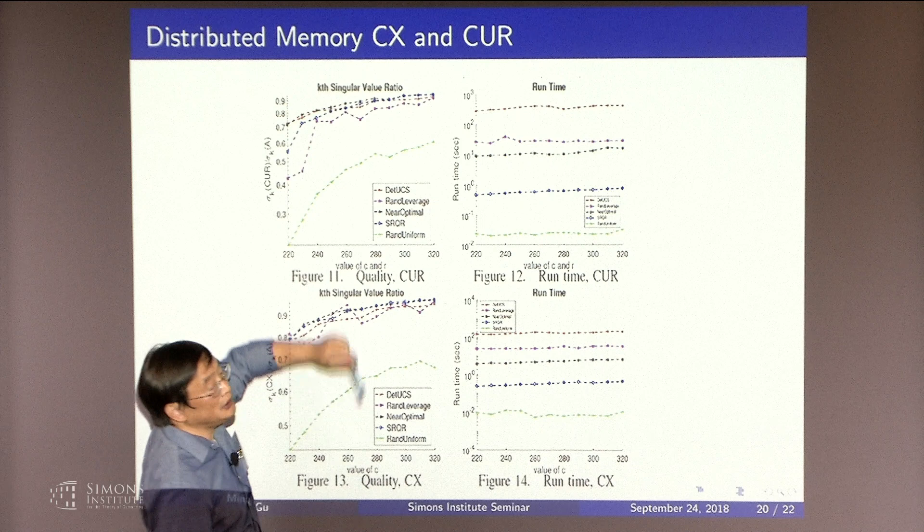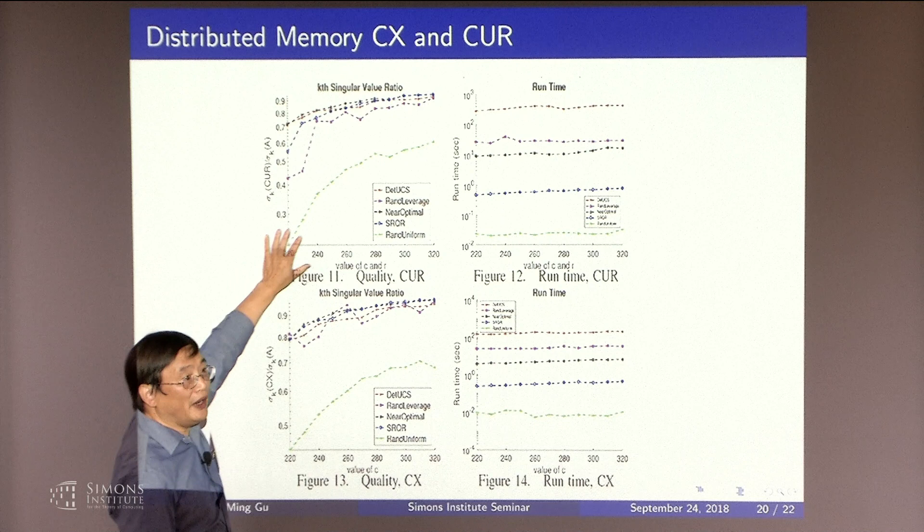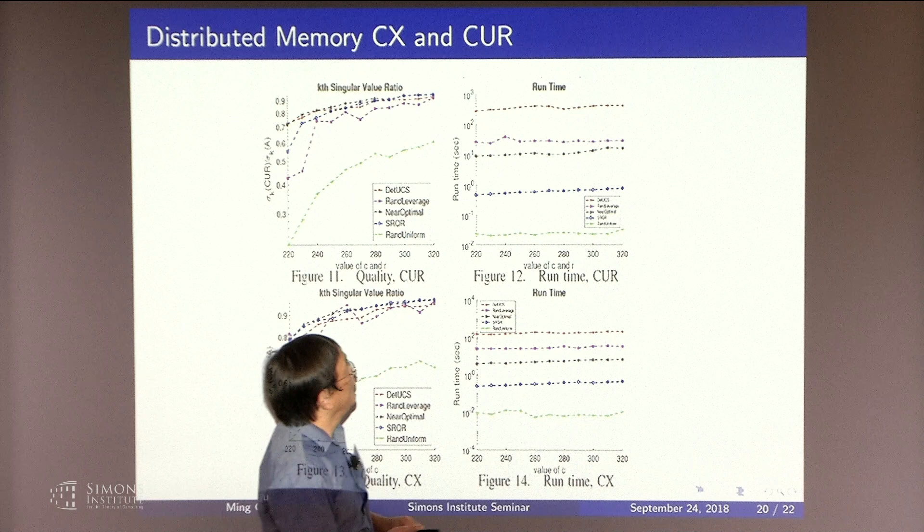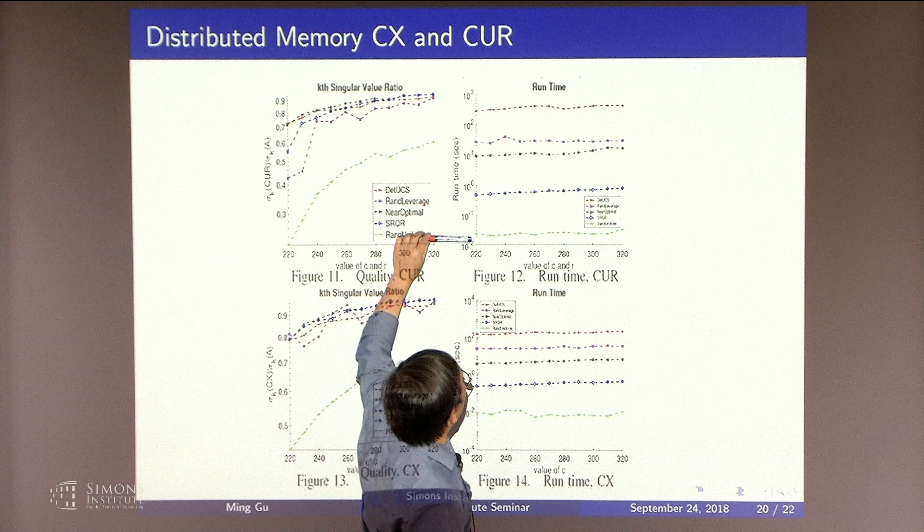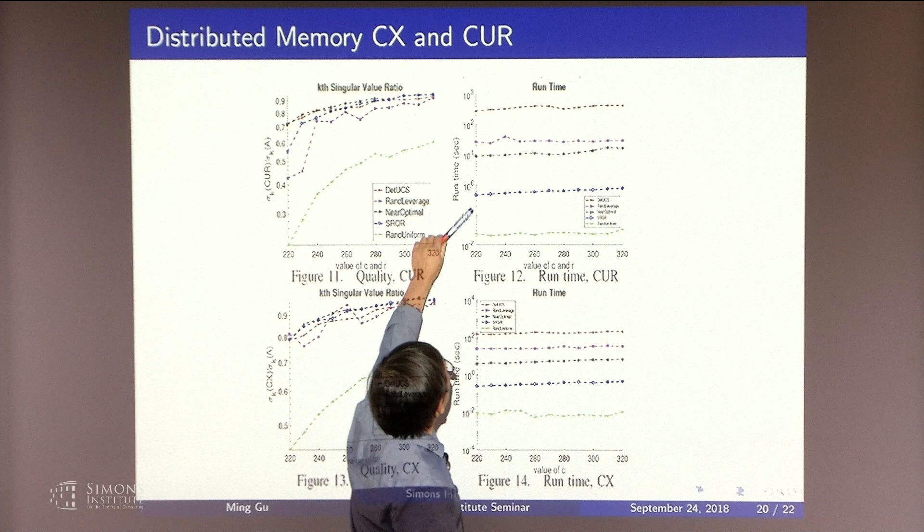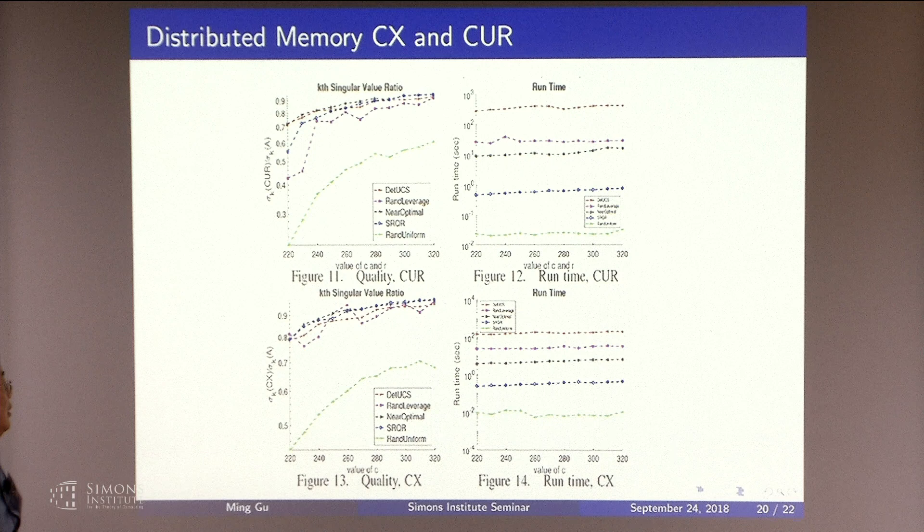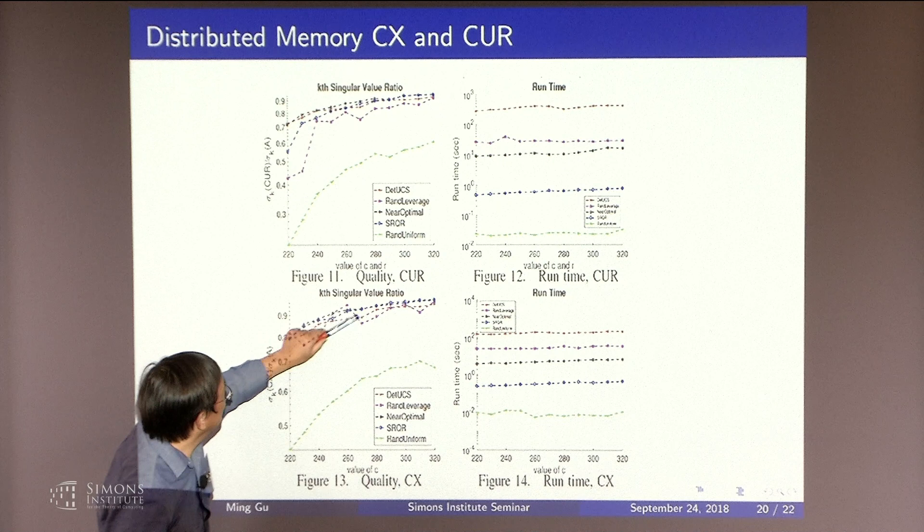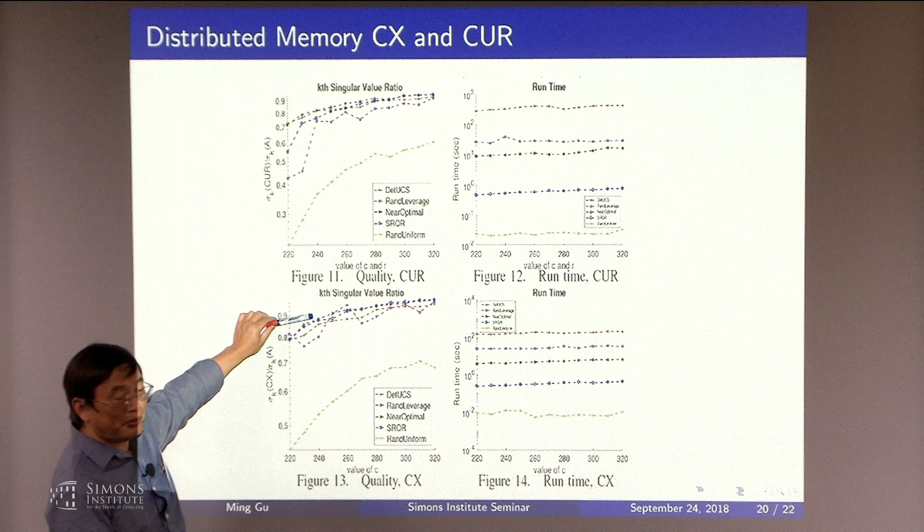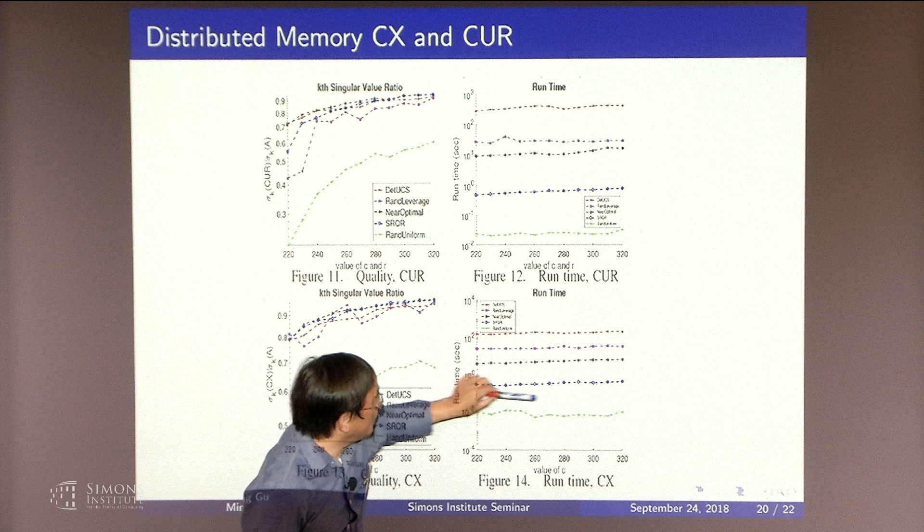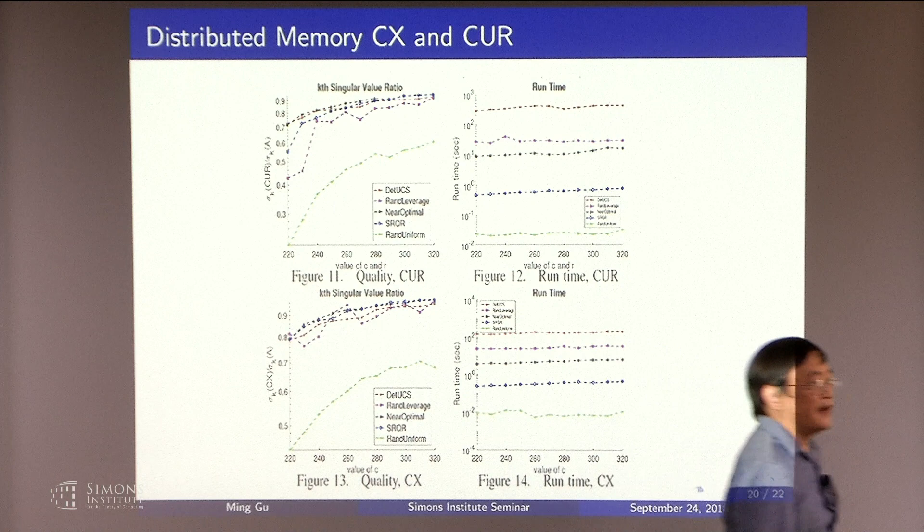From time. So here, this is a QR with kind of random pivoting. This is our method. These are the competing methods. We are effectively much better than the other methods. That's the CUR. This is CX. It's kind of the same kind of behavior. This is a random column permutation. This is our method somewhere. And these are the competing methods. So for the competing methods and our method, the qualities are comparable, but our method is here as far as runtime goes. It's again, maybe a factor of 10 or more. Thank you very much.